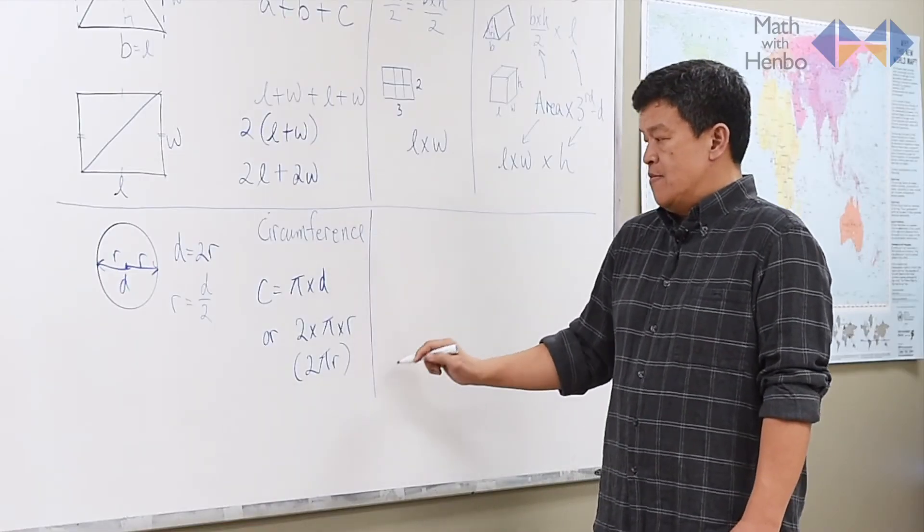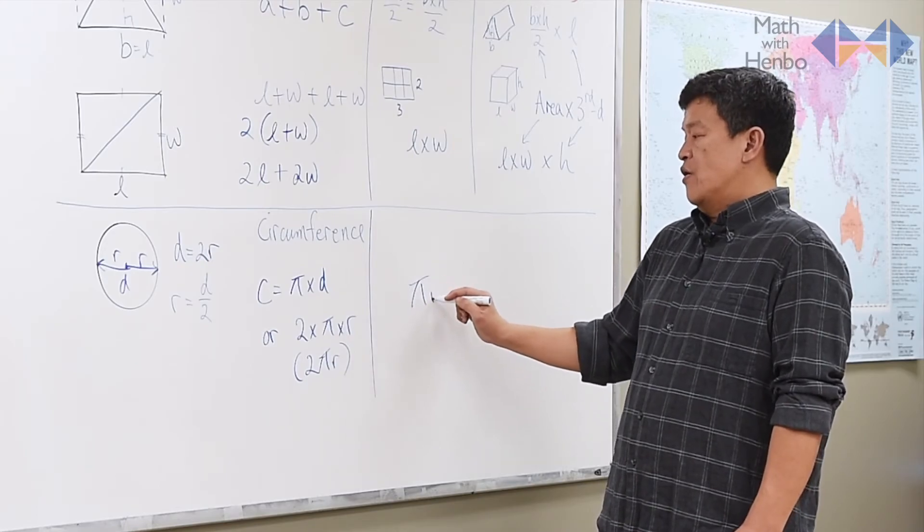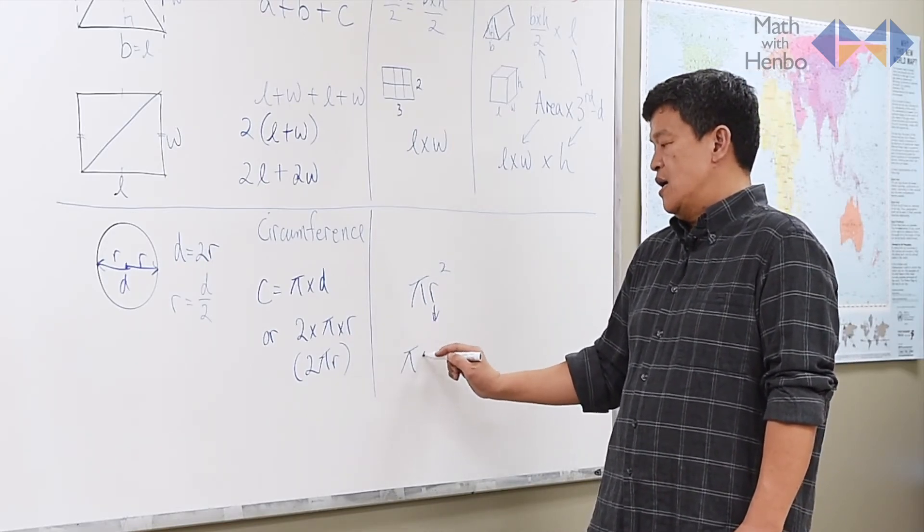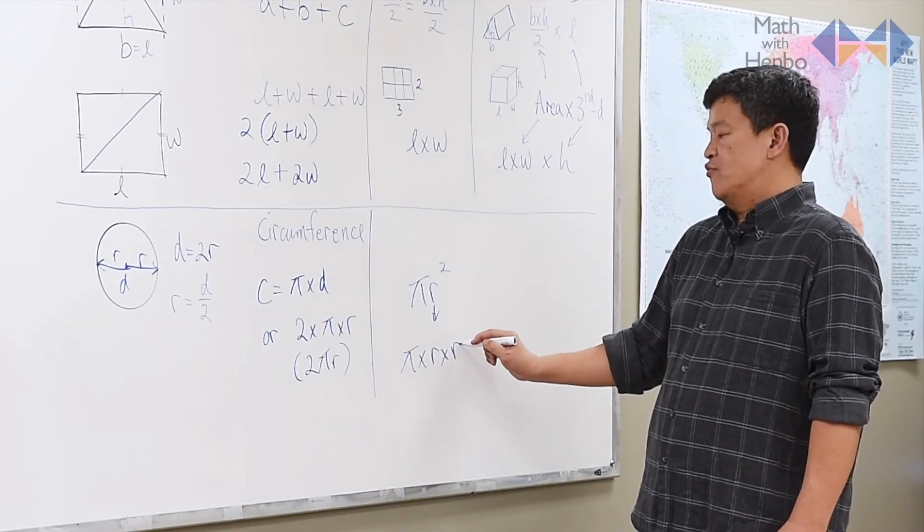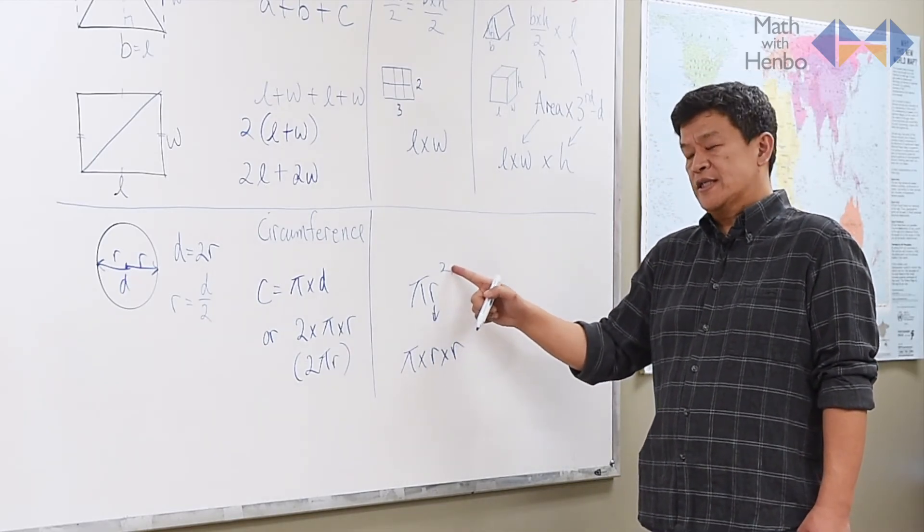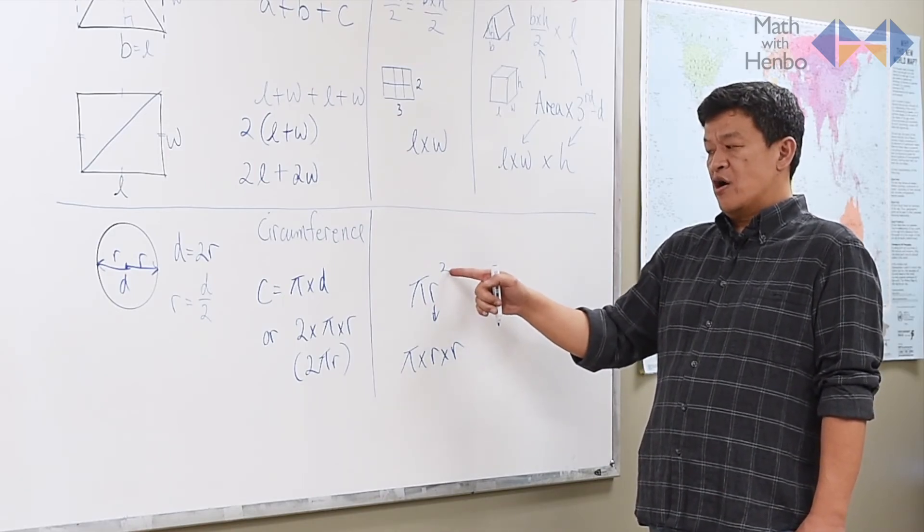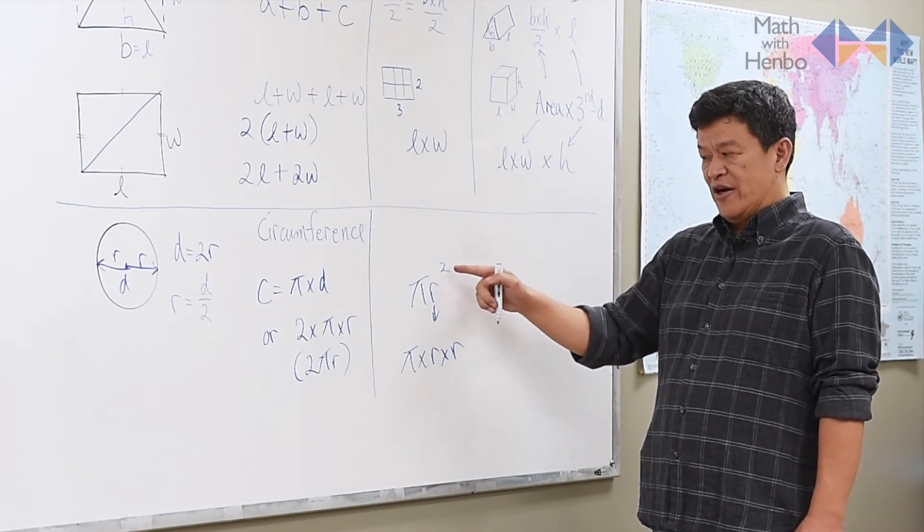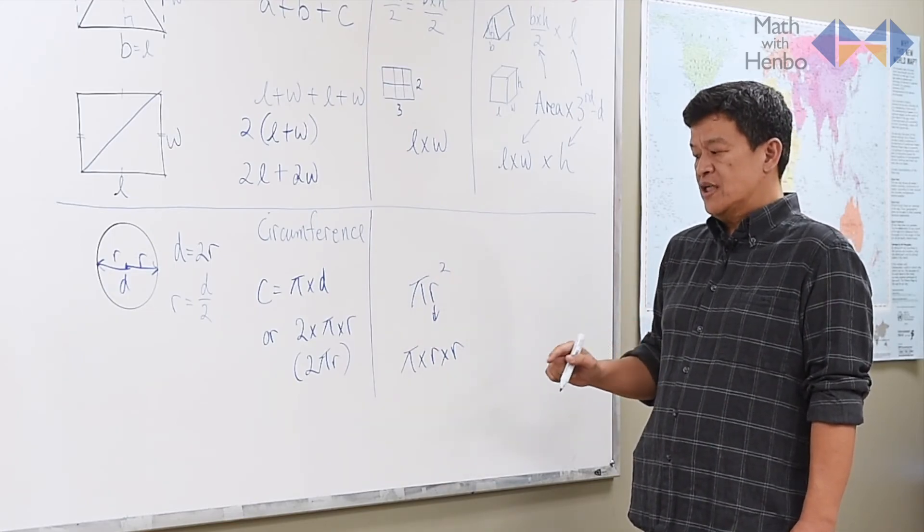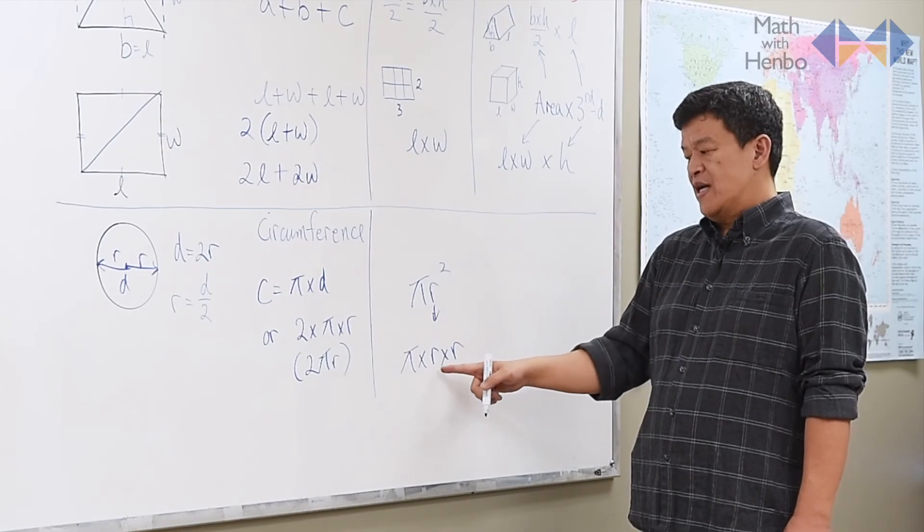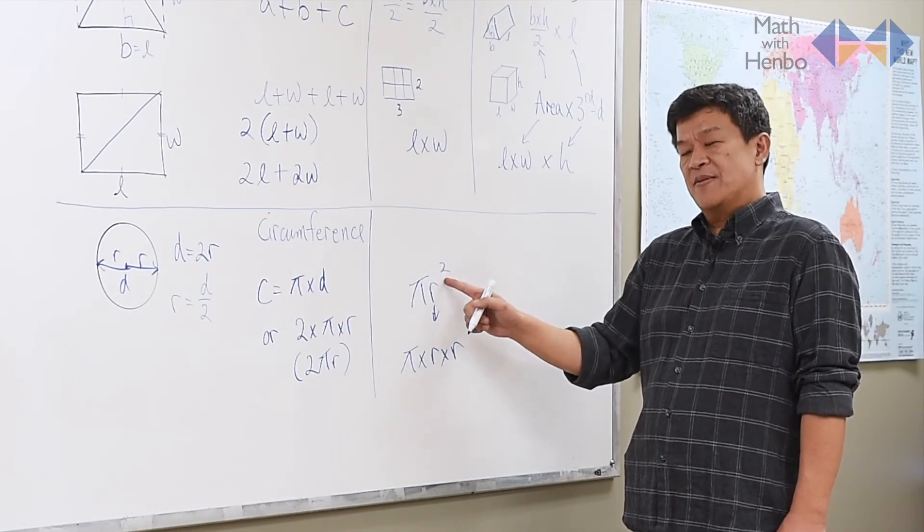As for the area, you square the radius. This is known as pi times radius times radius. In case you don't know what an exponent is, it is a faster way of multiplying. So when you see a square or a cube on top, or whatever the small number, superscript up there is, multiply the big base, big number or letter by itself that many number of times. And that's it.